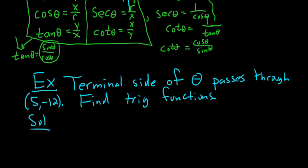So we don't have to draw a picture. We can, but we really don't have to. So x here is 5, right? And then y is negative 12. So we have x and y, now we just need r.